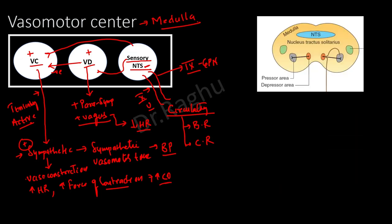A second school of thought describes three areas in the medulla: the nucleus tractus solitarius (sensory area), and within the vasomotor center, a pressar area and a depressar area. The pressar area is similar to the vasoconstrictor area — its neurons innervate the sympathetic nervous system, are tonically active, and when stimulated cause increased heart rate, increased force of contraction, and vasoconstriction. Stimulating the depressar area inhibits the pressar area.